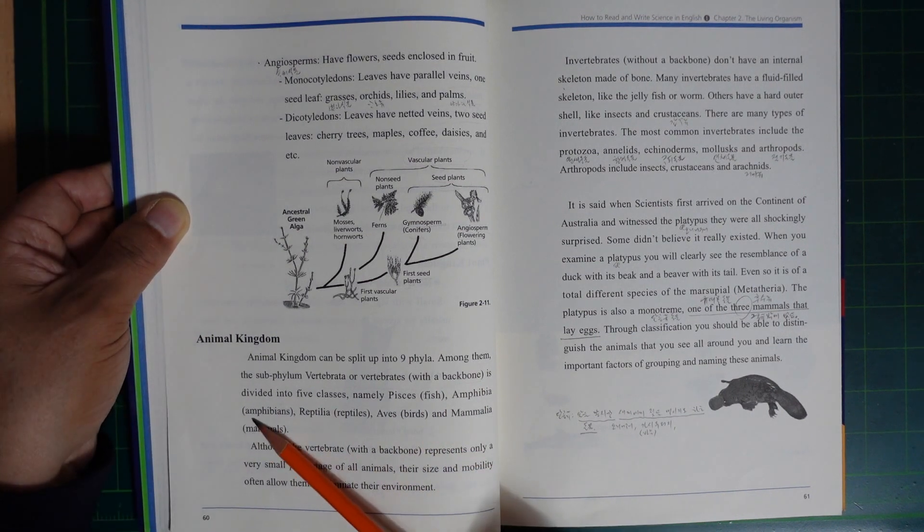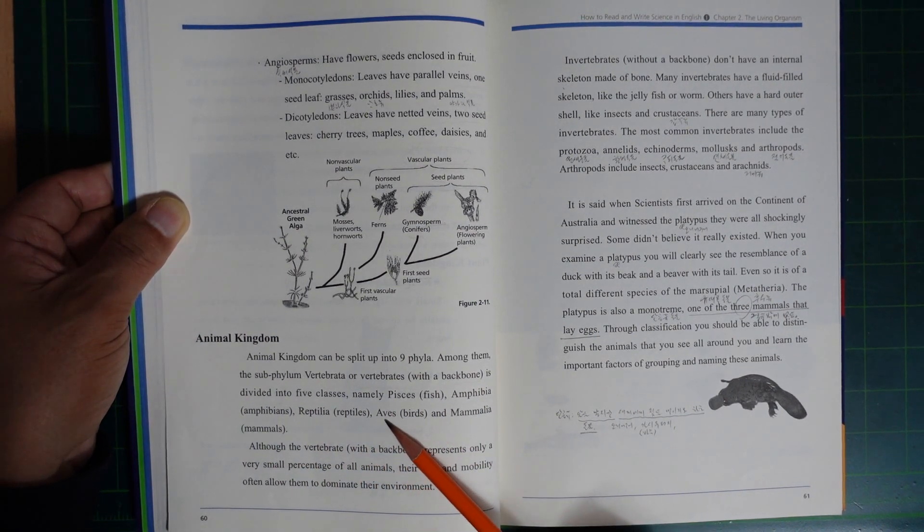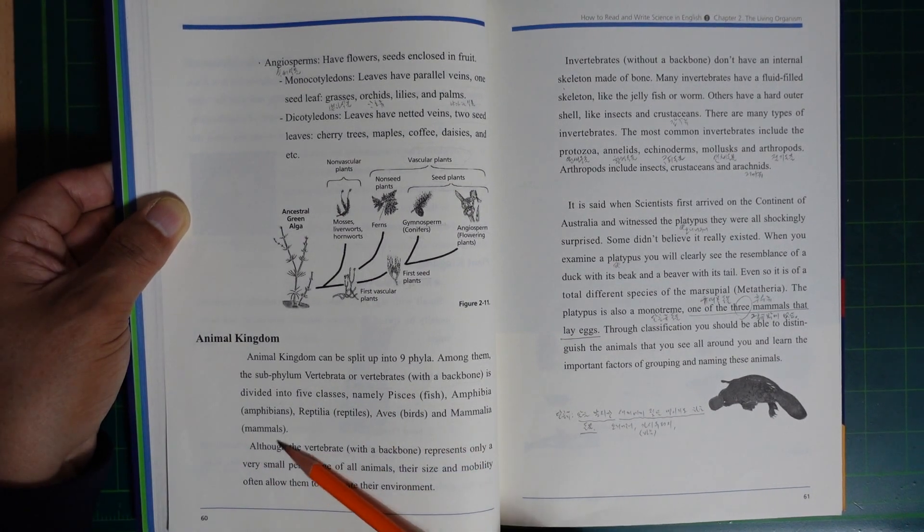The five classes are: Fish, Amphibia or amphibians, Reptilia or reptiles, Aves or birds, and Mammalia or mammals.